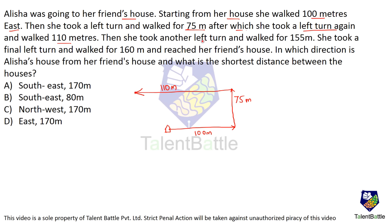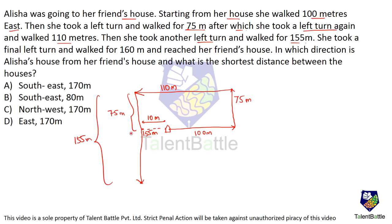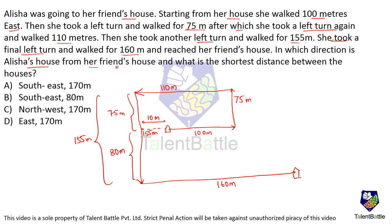Then she took another left turn and walked 155 meters. This total is 155 meters — 10 meters plus 75 meters plus 80 meters, since 80 plus 75 is 155. Then she took a final left turn and walked 160 meters, reaching her friend's house. In which direction is Alicia's house from her friend's house? It is northwest — answer is option C. You don't even have to calculate the distance.